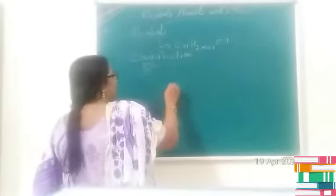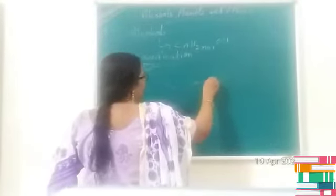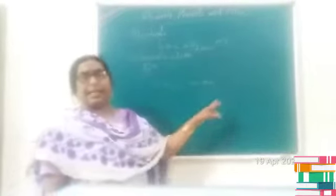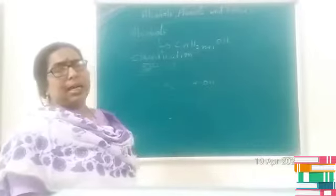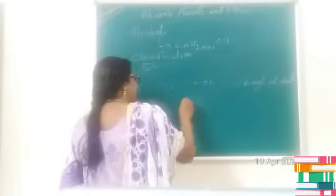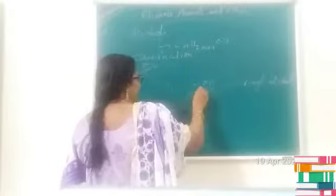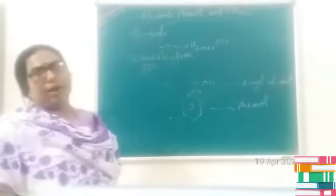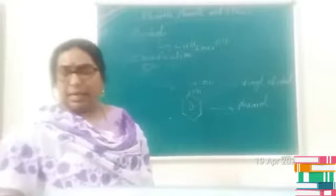On the basis of sp2 hybridization: if you consider CH₂=CHOH, the OH is directly attached to a double-bonded carbon (sp2 hybridized carbon) of a straight chain — this is termed as vinyl alcohol. And if OH is directly attached to an sp2 hybridized carbon of a benzene ring, then it is termed as phenol.